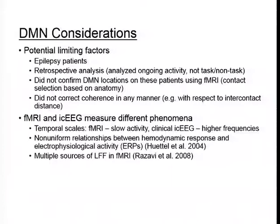There could also be multiple sources of low-frequency fluctuations in fMRI. Razavi et al. in 2008 looked at low-frequency fluctuations in fMRI below 0.1 Hz and swept between different sampling rates, finding that as sampling rate decreases you tend to get artifacts that fold in and get aliased — including cardiorespiratory artifacts — with the main contributor being vasomotion. These factors could explain the discordance we see between intracranial EEG and fMRI in the second spectrum specifically.